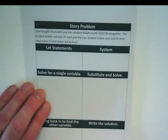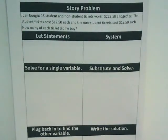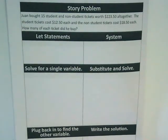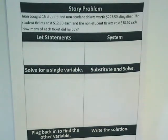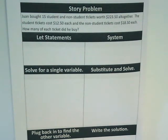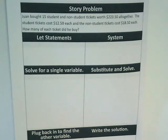By the way, there is a single problem quiz on this tomorrow. Read through this problem. Juan bought 15 student and non-student tickets worth $223.50 altogether. The question I get, did he buy 15 student and 15 non-student? No. He bought a total of 15 tickets. And the total of that sale was $223.50. The student tickets cost $12.50 each, and the non-student tickets cost $18.50 each. How many of each ticket did he buy?